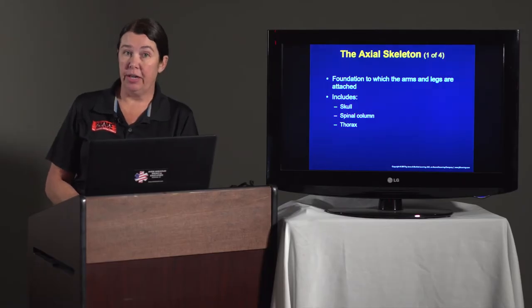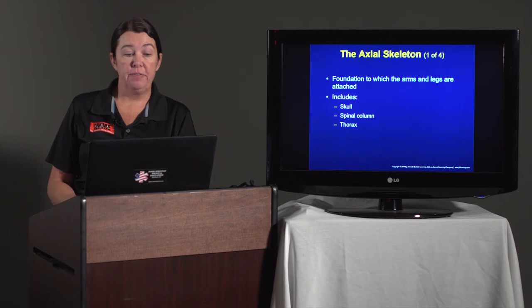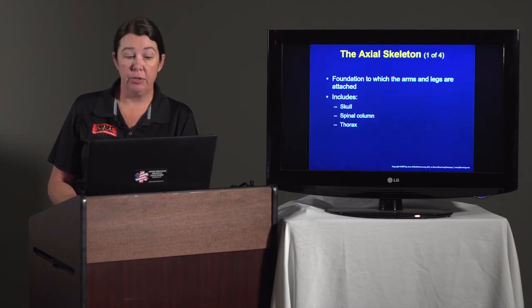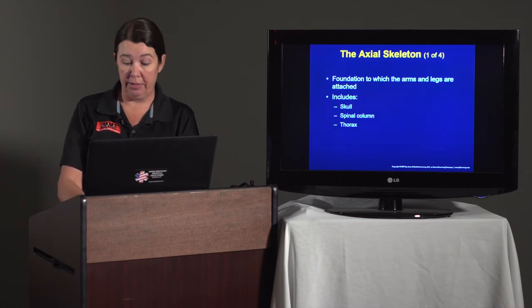The first system we're going to talk about is the skeletal system. The skeletal system gives us our recognizable human form. It protects internal organs and it contains bones, ligaments, tendons, and cartilage. The axial skeleton is the foundation to which the arms and legs are attached, including the skull, the spinal column, and the thorax.